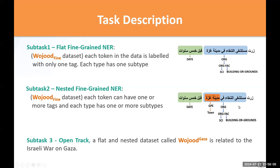The third subtask is based on a new dataset called Wujud Gaza, which is annotated in flat and listed subtypes and is related to the Israeli war on Gaza.